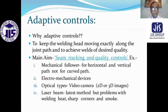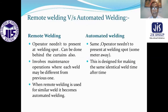Adaptive control is used to keep the welding head moving exactly along the joint path and to achieve welds of desired quality. The main aim is seam tracking and quality control. Methods include: mechanical followers for horizontal and vertical paths (not for curved paths), electromechanical devices, optical types, video cameras for 2D or 3D images, and laser beam methods as the latest approach. Problems with laser methods include welding heat, sharp corners, and smoke.